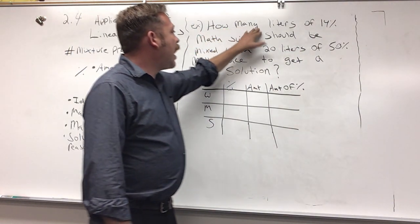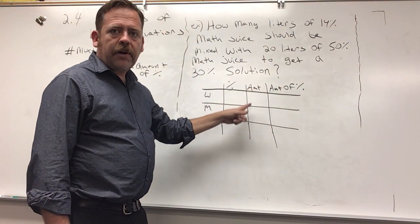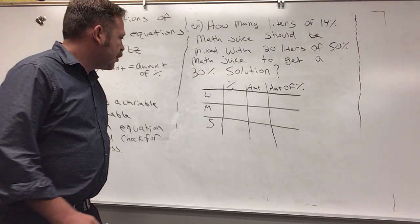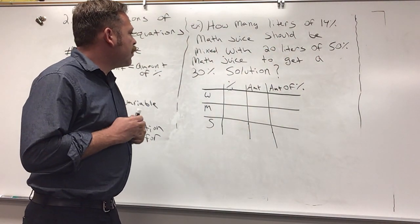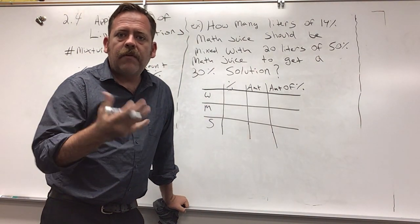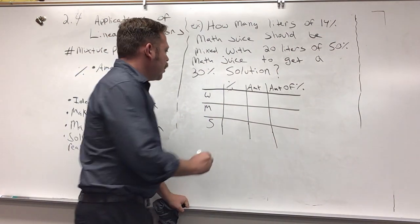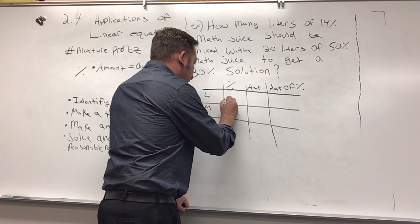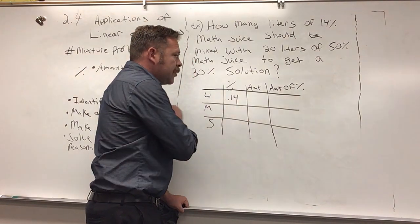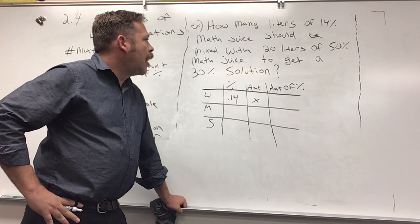The variable comes from the question, how many liters, that would be the amount. I want to know the amount of liters of 14%, so our weak percentage is going to be the 14%. Let's get in the habit of when we have percentages and we're making the equations, writing them as a decimal, so 14% would be 0.14, and since it says how many of the 14%, my variable is going to be that.